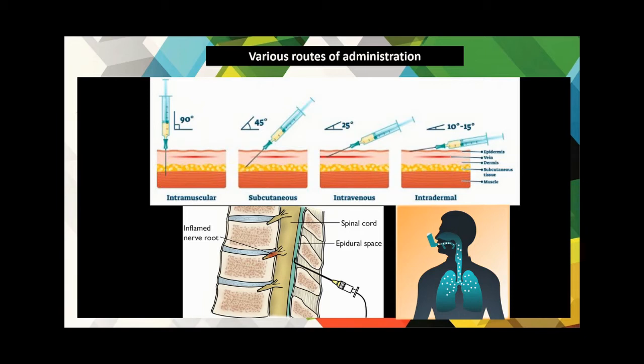Parenteral refers to any route other than the GI tract. These routes are chosen when the drug is not fully absorbed from the gut, and are always administered by syringe. In the subcutaneous route, the drug is injected into loose subcutaneous tissue under the skin in a very small amount — less than 2 ml — with slow but prolonged action. In the intramuscular route, the drug is administered with a heavy, long needle that penetrates the subcutaneous tissue and deposits the drug deep between muscle layers.